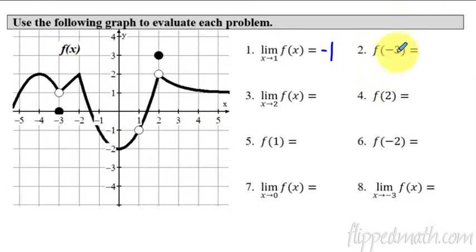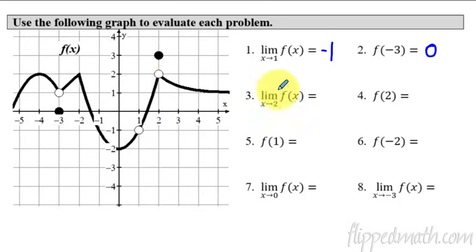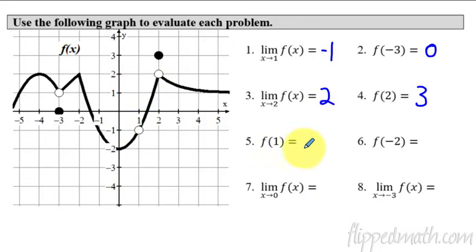Number 2: this one doesn't have a limit symbol, so we're just looking at x equals negative 3. That's an open hole — the filled-in dot is right there, so the y value is 0. Next, the limit as x approaches 2: approaching from both sides of 2, the y value of the graph is approaching 2. And then what is the function at x equals 2? Where's the dot? It's up at 3. For f of 1, we go to x equals 1 — there's no filled-in dot, so the value is undefined or does not exist.